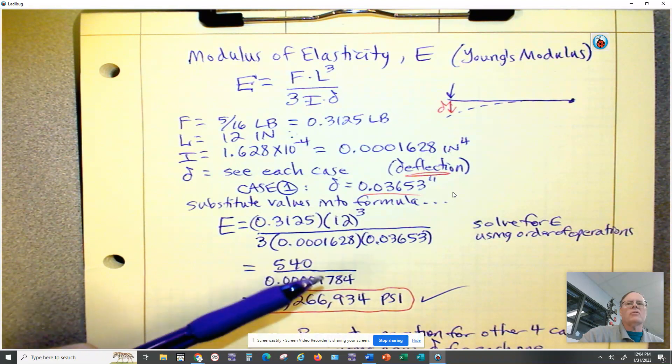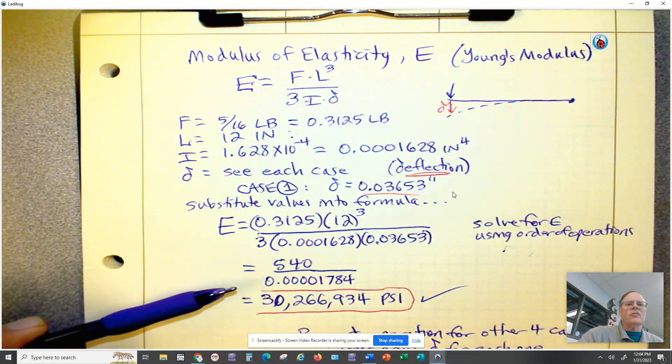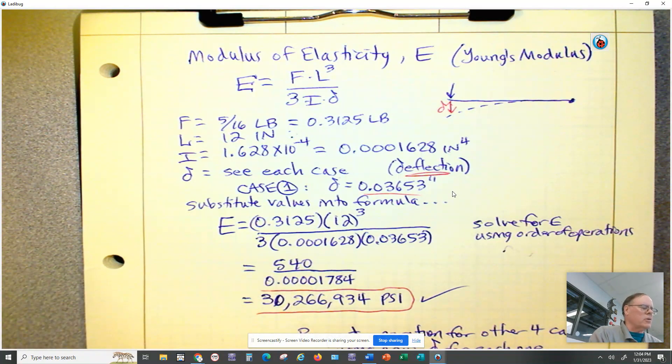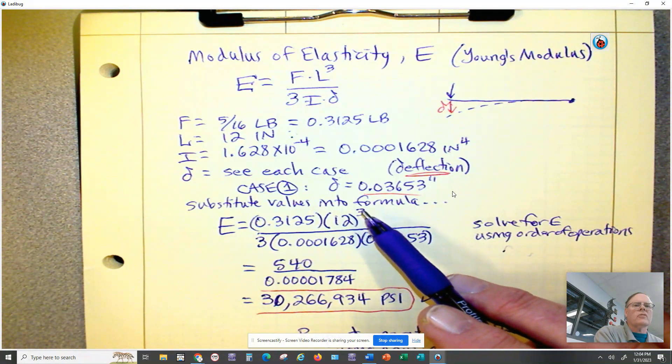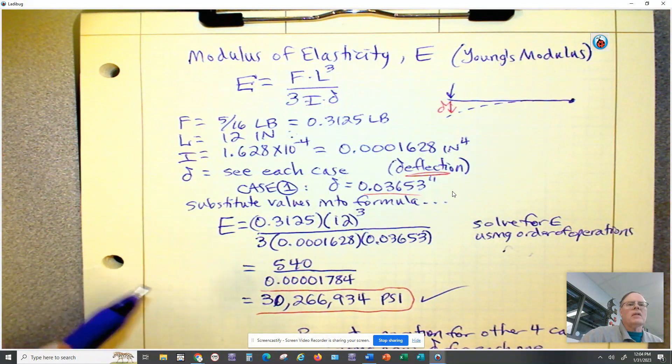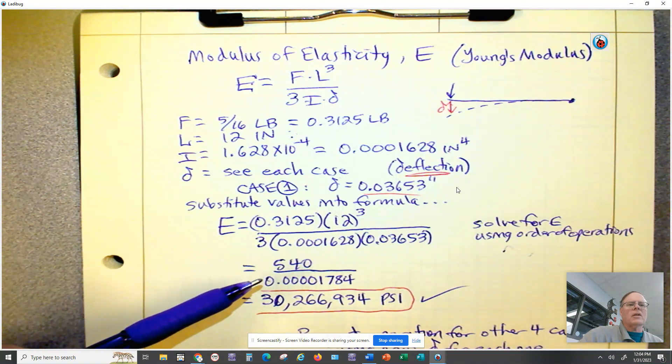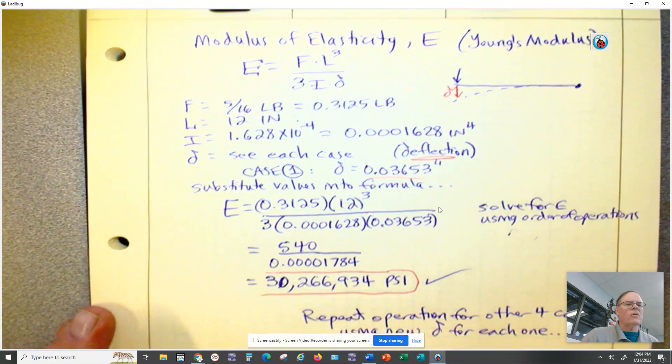When I substitute all these values in, I'm going to solve for E using order of operations. I solve for the top first. Be sure when you do the top, you do the cube of the 12, 12 to the third power, before you multiply times 0.3125. When we do the bottom number, I get a really long, small decimal number when you put all these in your calculator. Then when you do 540 divided by this small number, I get a really big number: 30,266,934.